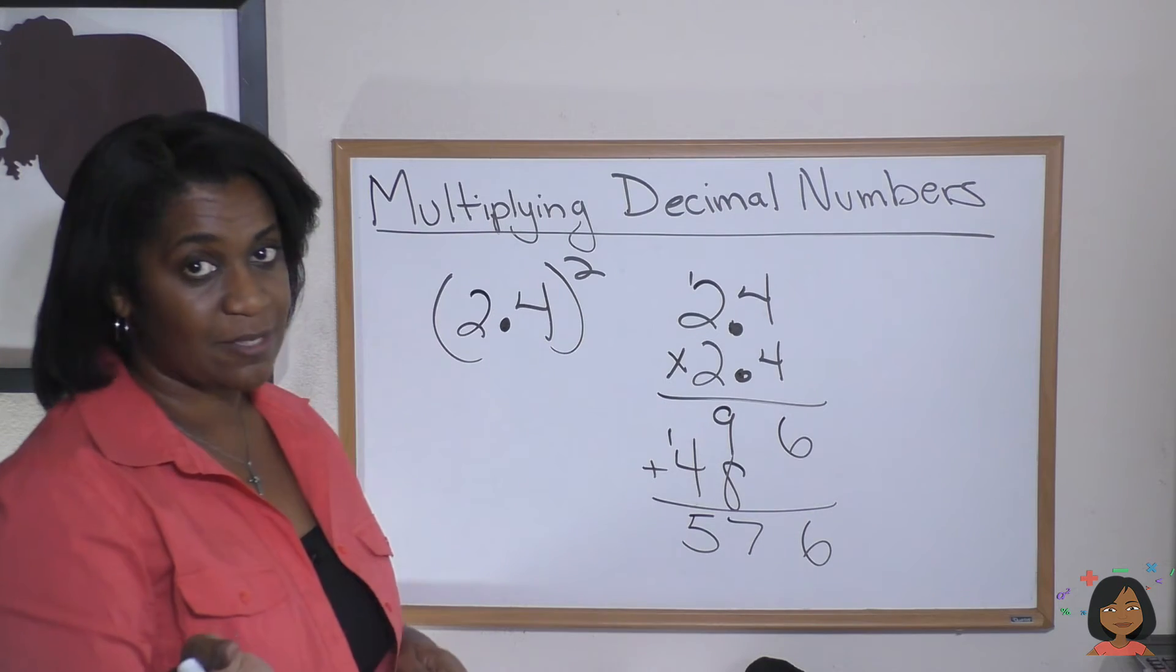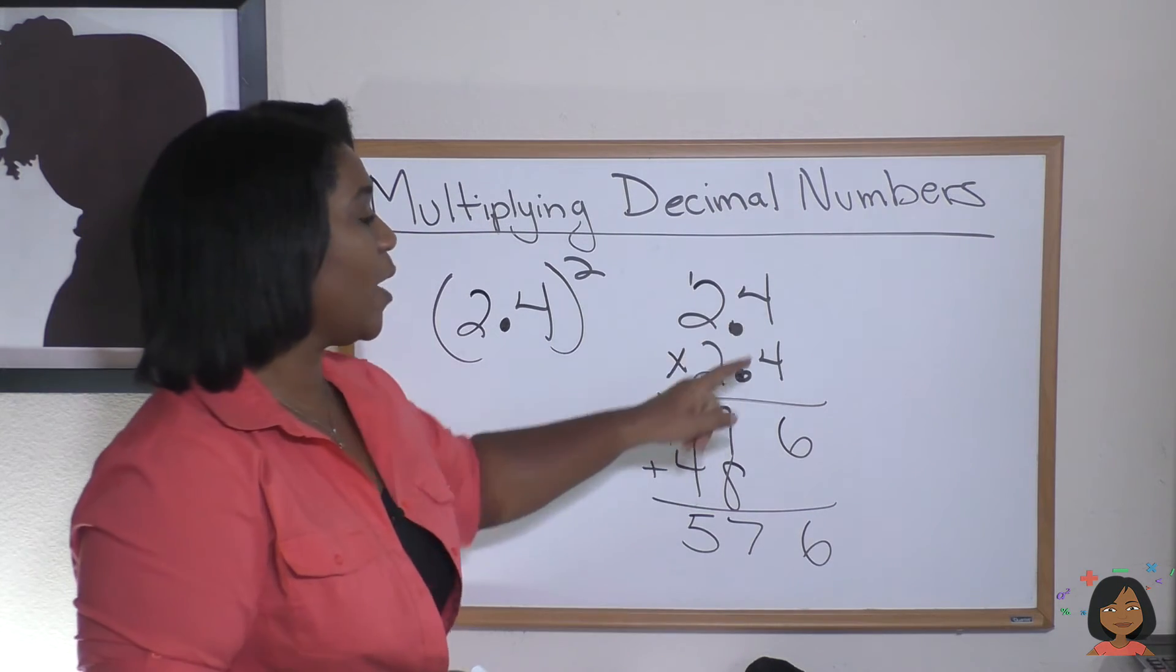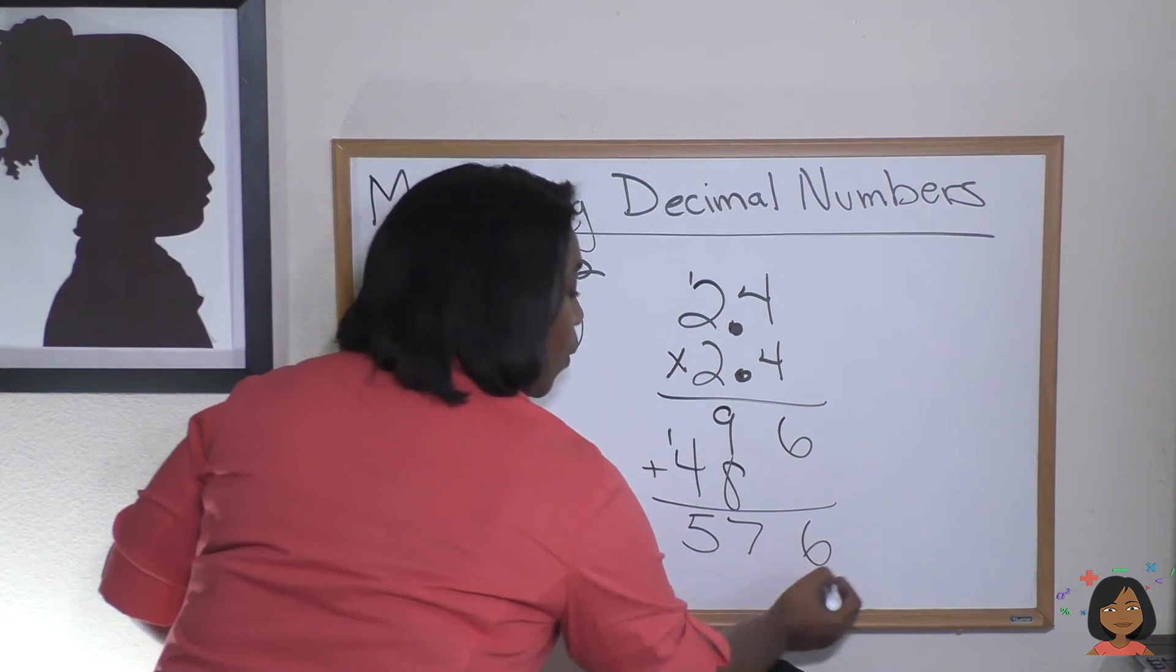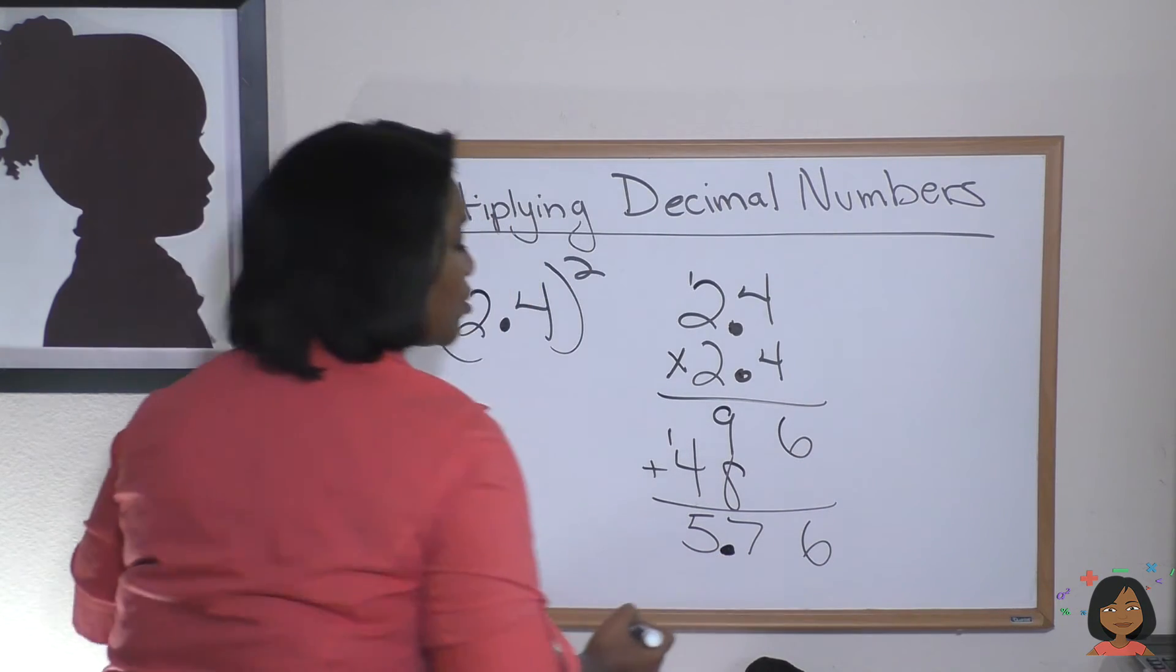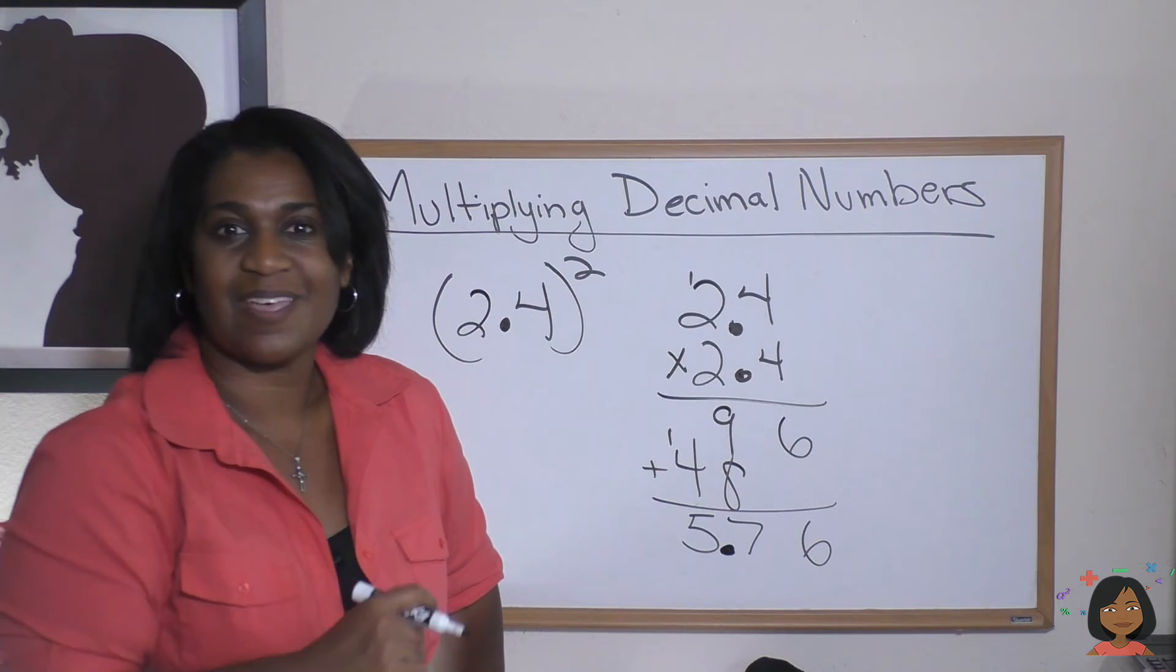How many decimal places do we have to account for? One, two. Let's put them in. One, two. Our answer is 5.76.